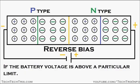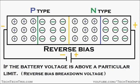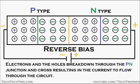But in a particular condition, if the battery voltage is above a particular limit, that limit is called the reverse bias breakdown voltage. If the battery achieves this reverse bias breakdown voltage, electrons and holes break down through the PN junction and cross this junction, resulting in current flowing through the circuit.